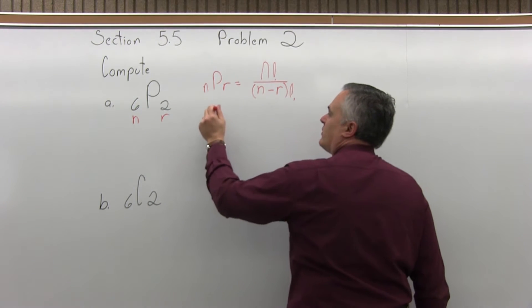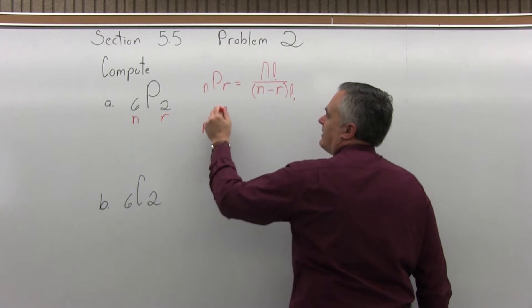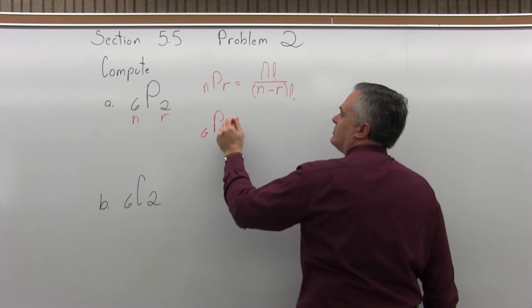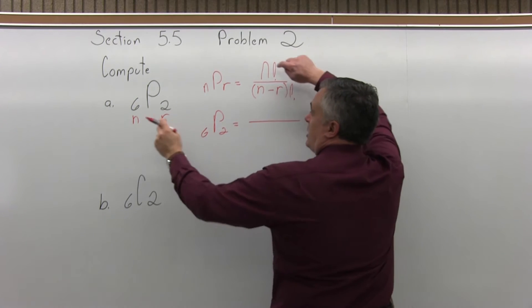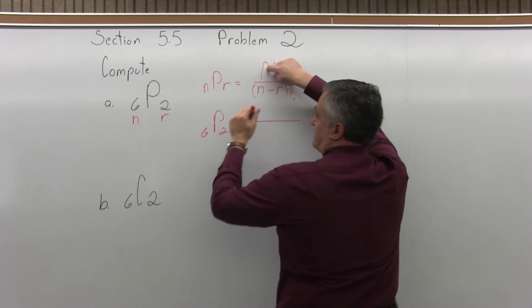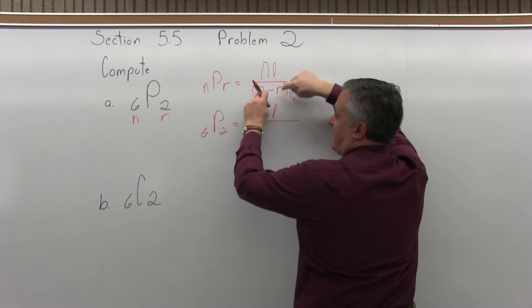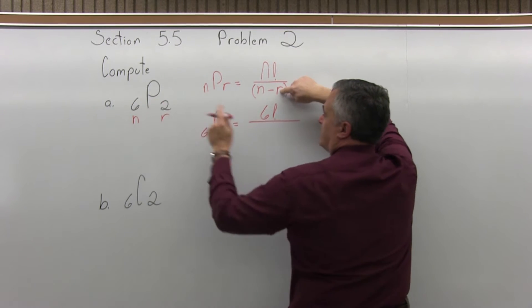So as you fill in the formula, let's put this in as a 6. 6 permutation 2 equals, so the top is n factorial, so n is 6, so 6 factorial. Then underneath in the parentheses, n minus r will be 6 minus 2 factorial.